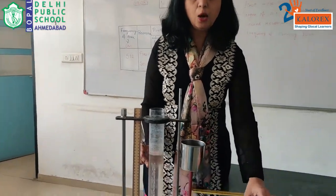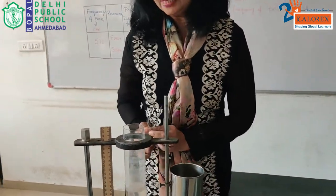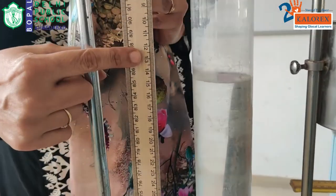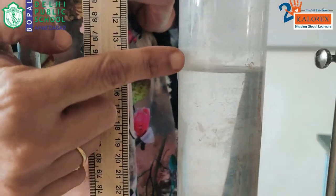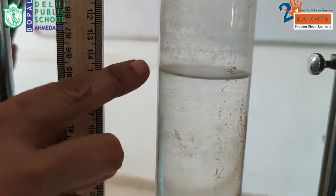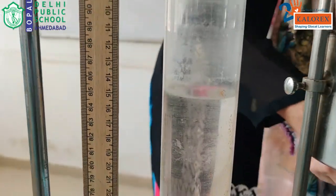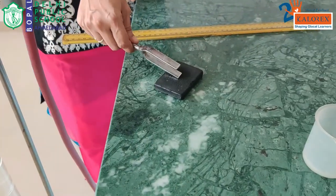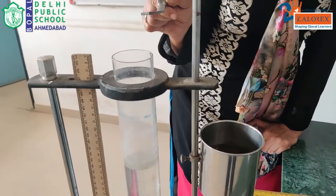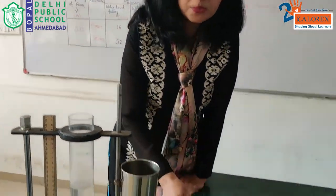I will now show how we receive the maximum sound at the first resonance position. You can see a meter scale attached here, and at present my air column length is around 13 to 14 cm — let's say 14 cm. By striking this tuning fork against the rubber pad and putting it over the tube, we will observe a maximum, louder sound. Just observe this closely.